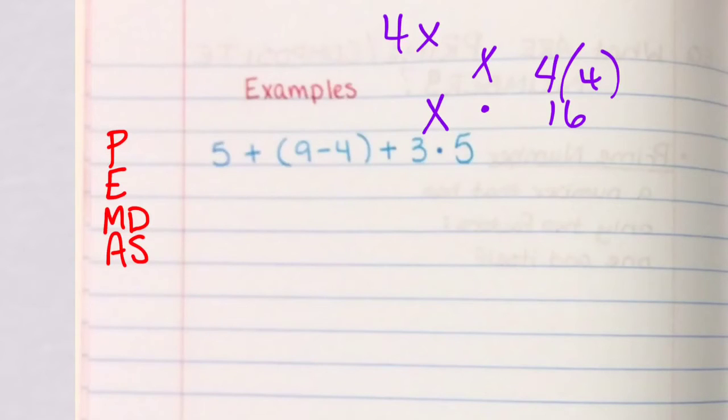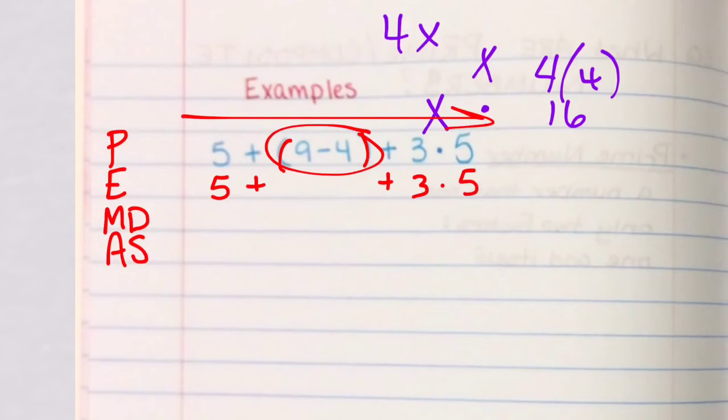So, we're going to do our example now. I wrote PEMDAS over here to the side, and I wrote it for the P for parentheses. I'm going to do it left to right and do the parentheses first. So always go left to right. And I'm looking, and there are my parentheses. So I'm going to do that operation first. Everything else will stay the same. My 5, my plus sign, my plus sign, my 3, my dot for multiplication, and 5. So right here, 9 minus 4 is 5.